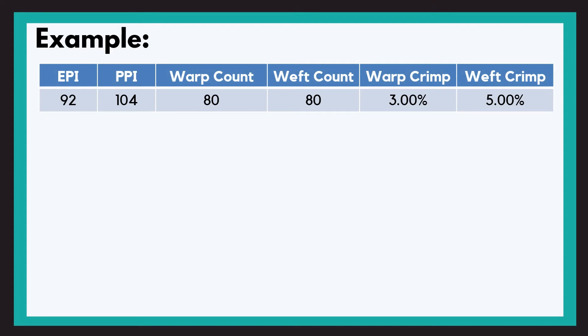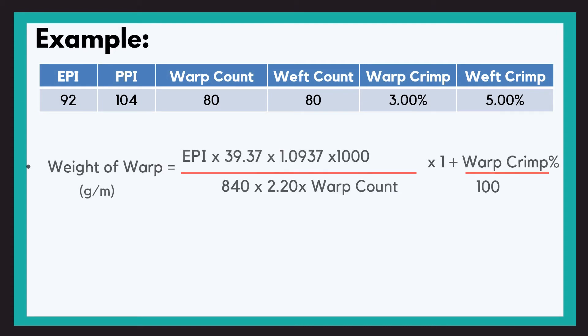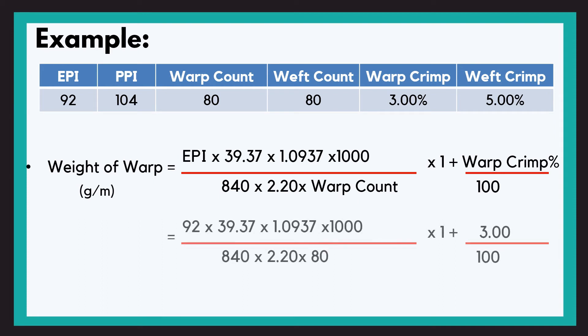We have given some data here. We know the formula. Let us substitute the values: EPI is 92 × 39.37 to convert into meters × 1.0937 for converting into yards × 1000 divided by 840 × 2.20 × 80. 80 is the English count. 840 because number of hanks of 840 yards, and 2.20 for converting into kgs, and 1000 to convert it into grams × (1 + 3 by 100), so it will be 1.03. This is our length of warp.